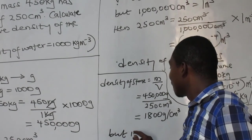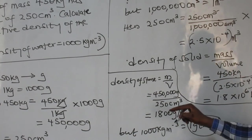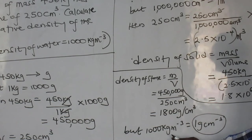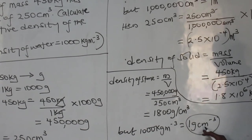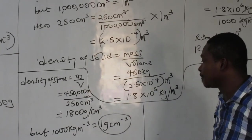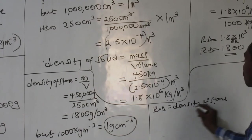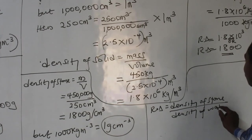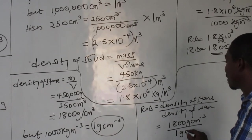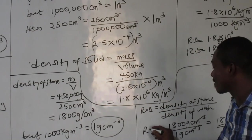Now, do you know that 1000 kg per m³ is equal to 1 gram per cm³? The density of water is 1000 kg/m³ in standard units, but in sub-units it is 1 g/cm³. So these two values are equivalent. Using relative density equals density of solid over density of water: that is 1800 g/cm³ divided by 1 g/cm³, which gives 1800. The units cancel and relative density truly has no units — rd = 1800.